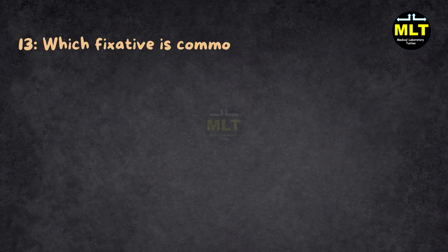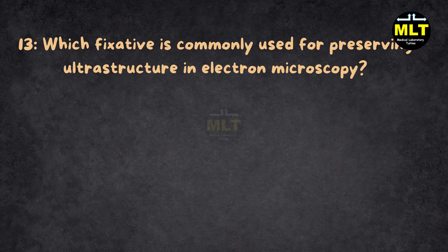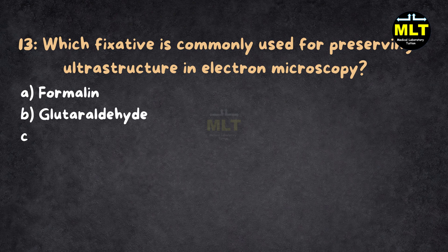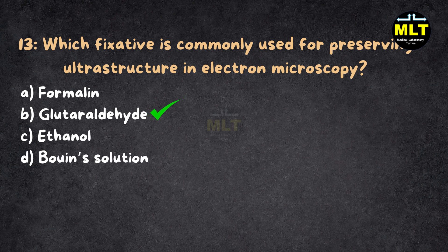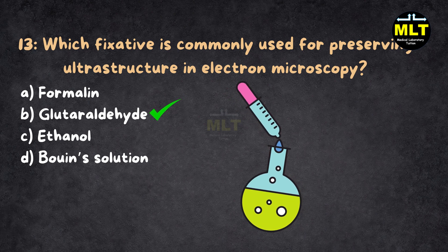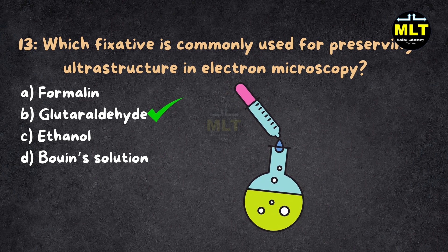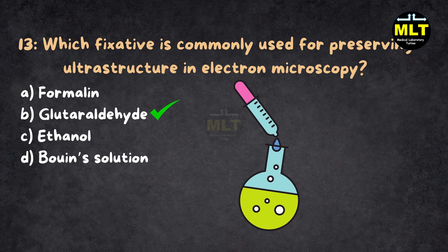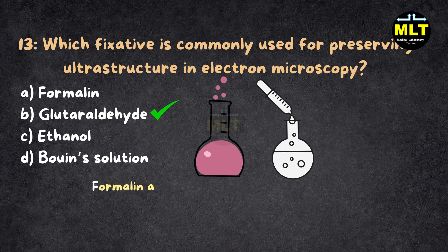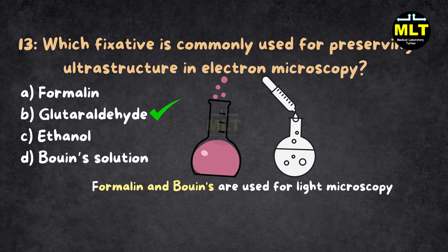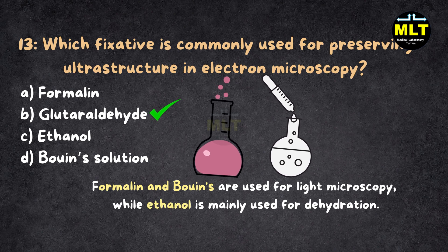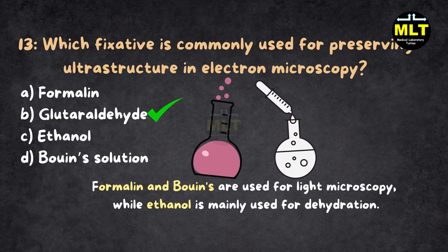Question 13: Which fixative is commonly used for preserving ultrastructure in electron microscopy? Options: A. Formalin, B. Glutaraldehyde, C. Ethanol, D. Bouin's solution. Correct answer: B. Glutaraldehyde. Explanation: Glutaraldehyde is the fixative of choice for electron microscopy as it preserves cell and tissue ultrastructure by cross-linking proteins and fixing cellular components in their native state. Formalin and Bouin's are used for light microscopy, while ethanol is mainly used for dehydration. It's like preserving a delicate work of art.